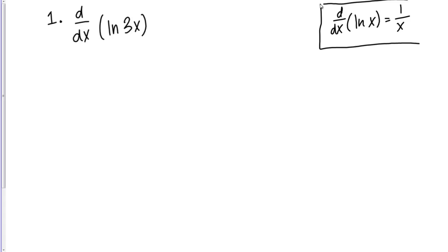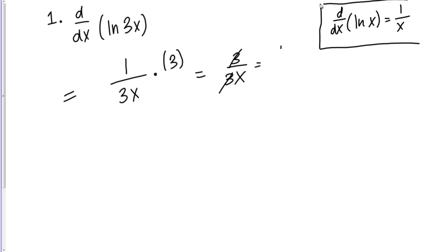The chain rule says that whenever you have an outer function and an inner function, the derivative is the derivative of the outer function, keeping the inner function in there, times the derivative of the inner function. We start by taking the derivative of the outer function. The derivative of the natural log of X is 1 over X, so keeping the inner function it's 1 over 3X — just 1 over whatever is inside the natural log. Then we multiply by the derivative of the inner function, which is the derivative of 3X, giving us 3. This gives 3 over 3X, or 1 over X.